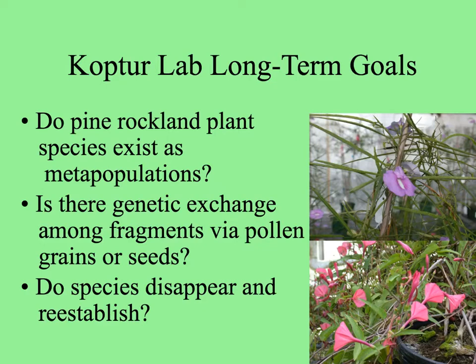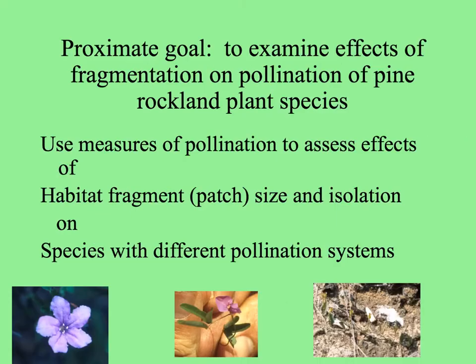With enough time and historical records, we can see if species disappear from certain areas and maybe reestablish. Our proximate goal is to look at effects of fragmentation on pollination of a variety of pine rockland plant species — from generalist- to specialist-pollinated. We use measures of pollination, like stigma pollen load or fruit set, to assess the effects of habitat fragment size and distance from other patches in species with different pollination systems.